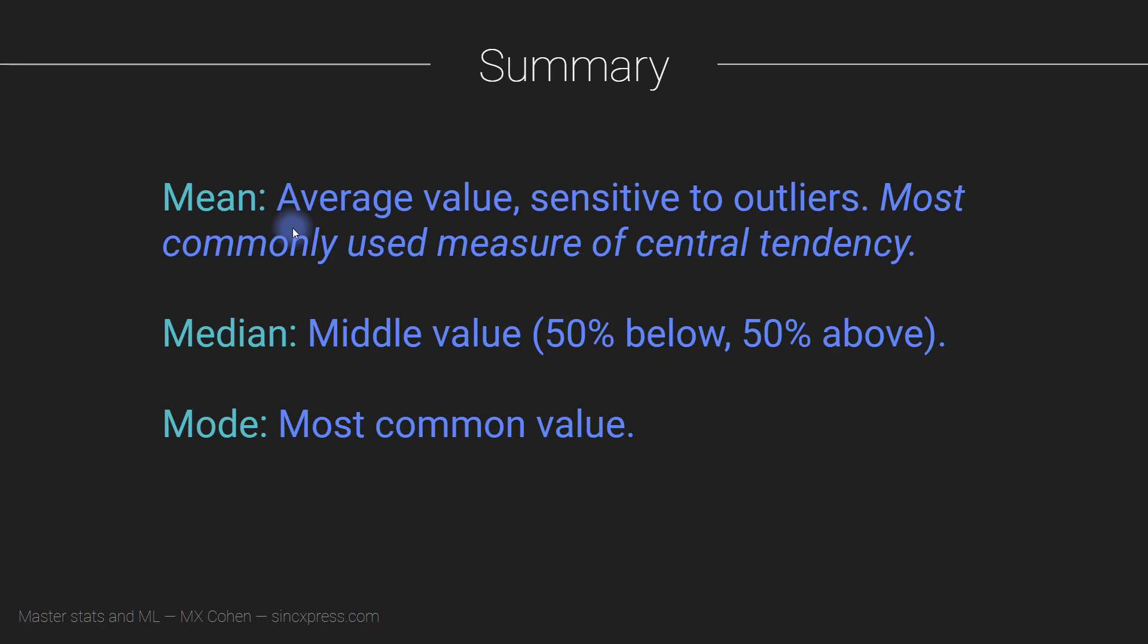Here's a quick summary. The mean is the average value and the most commonly used measure of central tendency. The median is the middle value of the data set, meaning 50% of the data are smaller and 50% are larger than the median. The mode is used for categorical data and is the most common value.